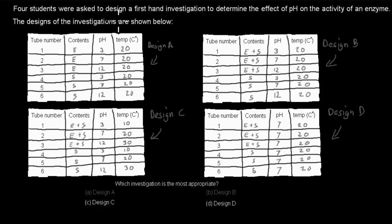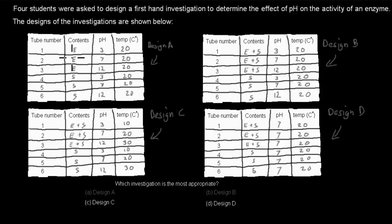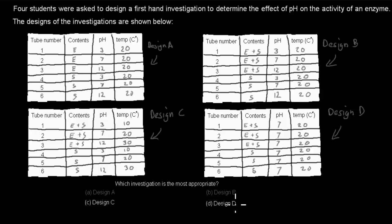The next question: Four students were asked to design an investigation to determine the effects of pH on the activity of enzymes. The design of the investigation is shown below, with four designs — A, B, C, D — each showing contents (enzyme or substrate), pH, and temperature across six test tubes. Which investigation is the most appropriate design — A, B, C, or D? Pause the video and attempt the question.